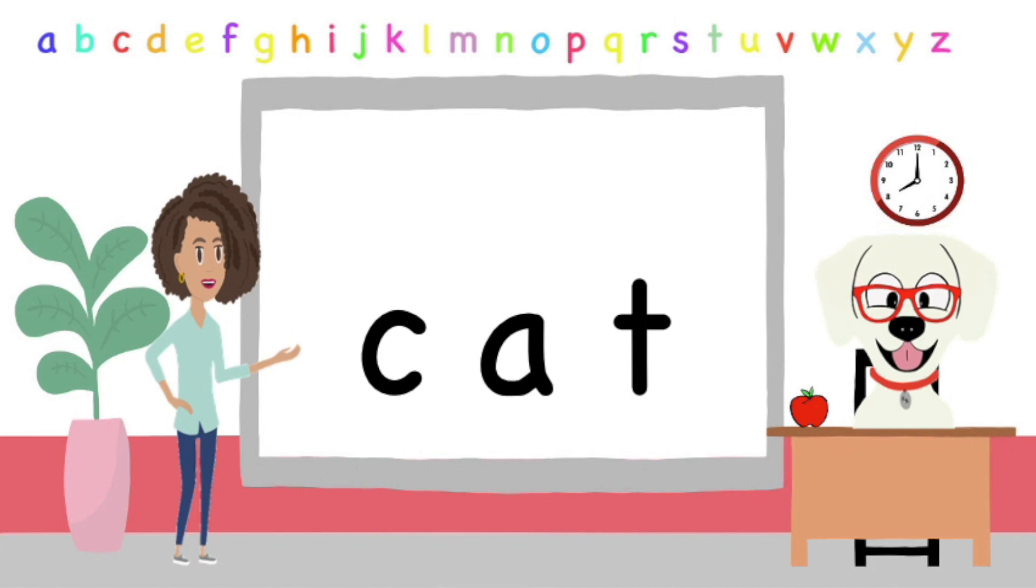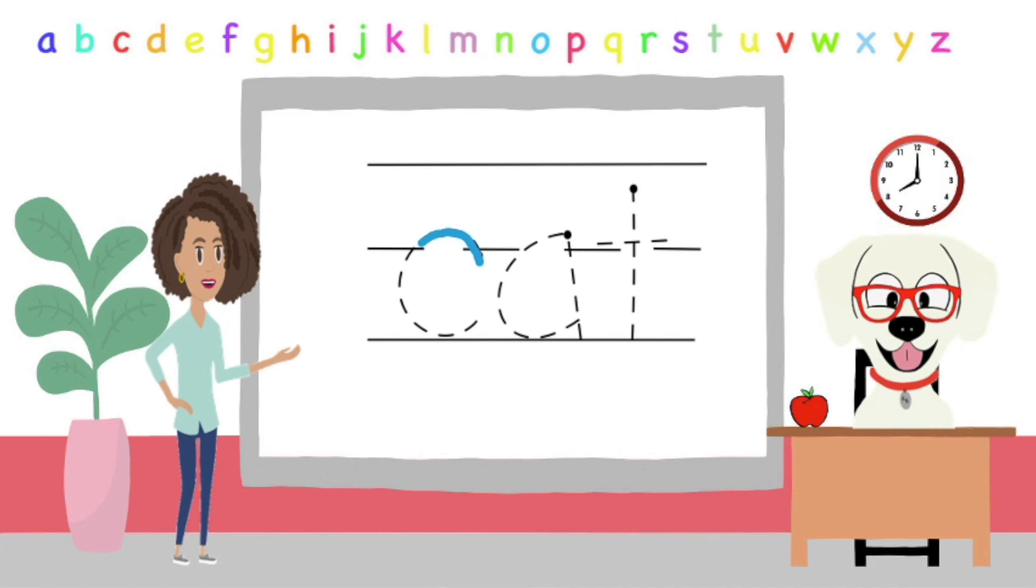Here we have K, A, T. K, A, T. K, A, T. That's right! It's CAT. K, A, T. Cat. Now let's write the word CAT. K, A, T. K, A, T. Great job!